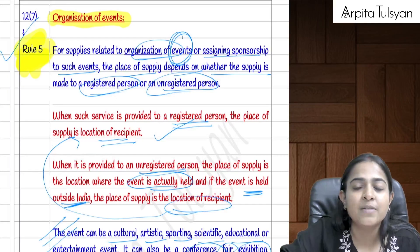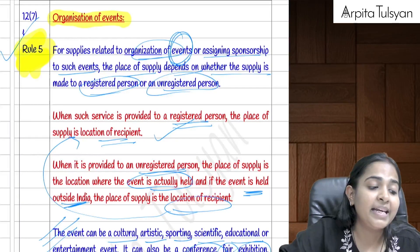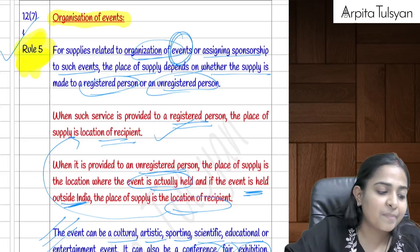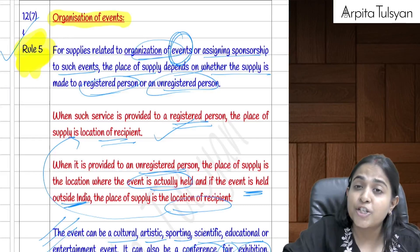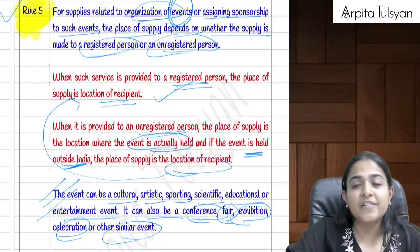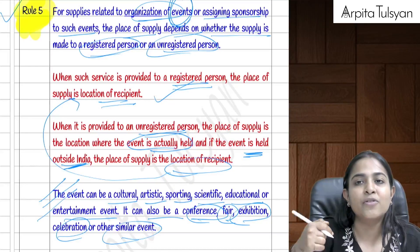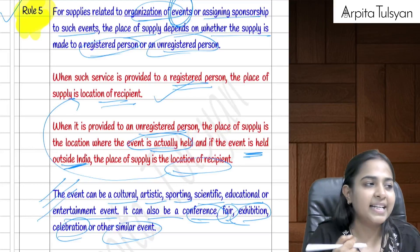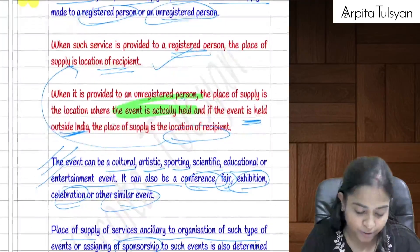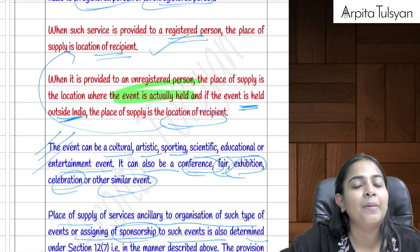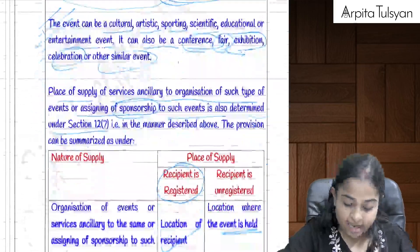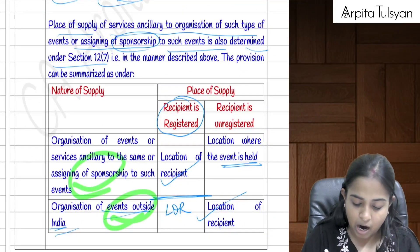Section 12(7) covers event organization services. If provided to a registered person, the place of supply is the location of the recipient, regardless of whether the event is in India or outside India. If provided to an unregistered person and the event is in India, the place of supply is where the event is held. If the event is outside India and the recipient is unregistered, the place of supply is the location of the recipient.